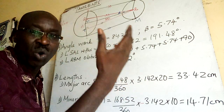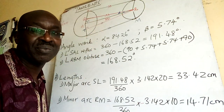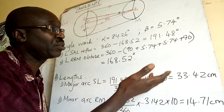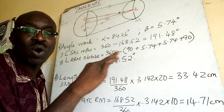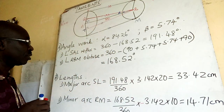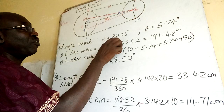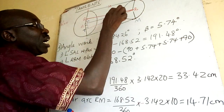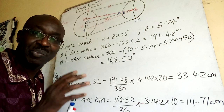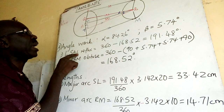Long method: 180 minus 90 minus alpha gives angle beta. Simple method: 90 minus 84.26. From what I'm given, I generate more angles. This angle here will be the same over there — so 84.26° appears here and also here, marked with a dot.